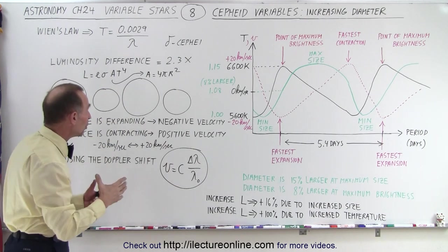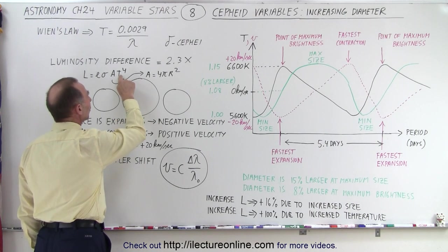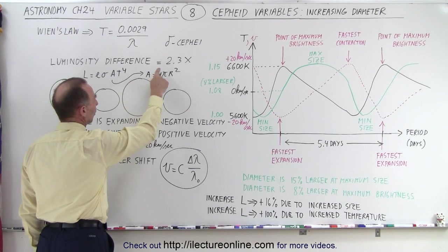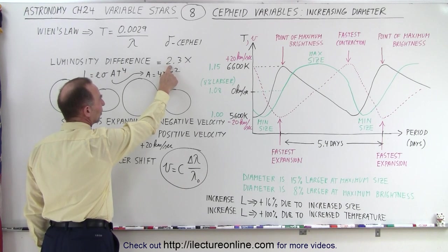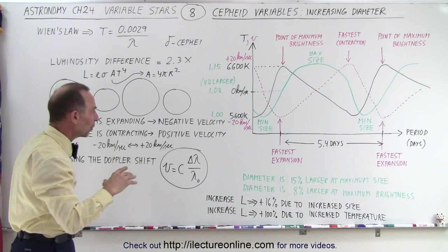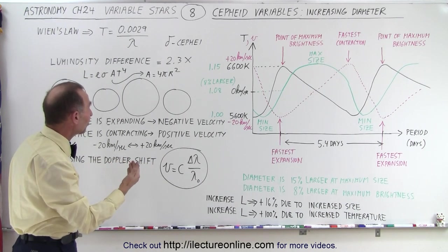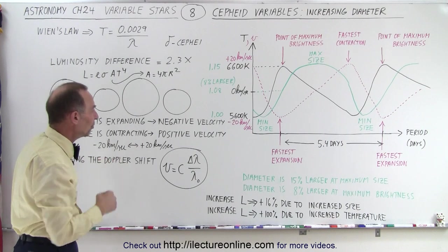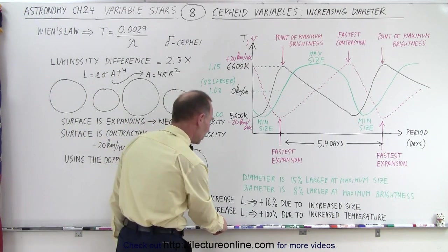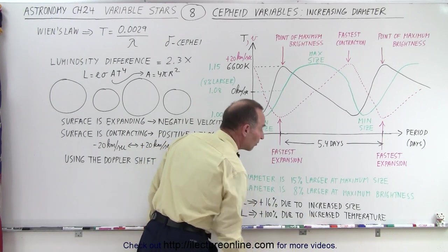And in the previous video, we noticed that almost all of the increase in luminosity was due to the increase in the temperature. We noticed that the increase in luminosity was about 2.3 times at its highest point versus its lowest point. And at least a doubling of the luminosity was due to the increase in temperature. So the increase of luminosity was primarily due to the increase in the temperature.